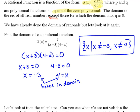Okay, in this last example that we did, we found the domain of this rational function. And we saw that by setting the denominator equal to zero, we found that negative three and four were holes in the domain.